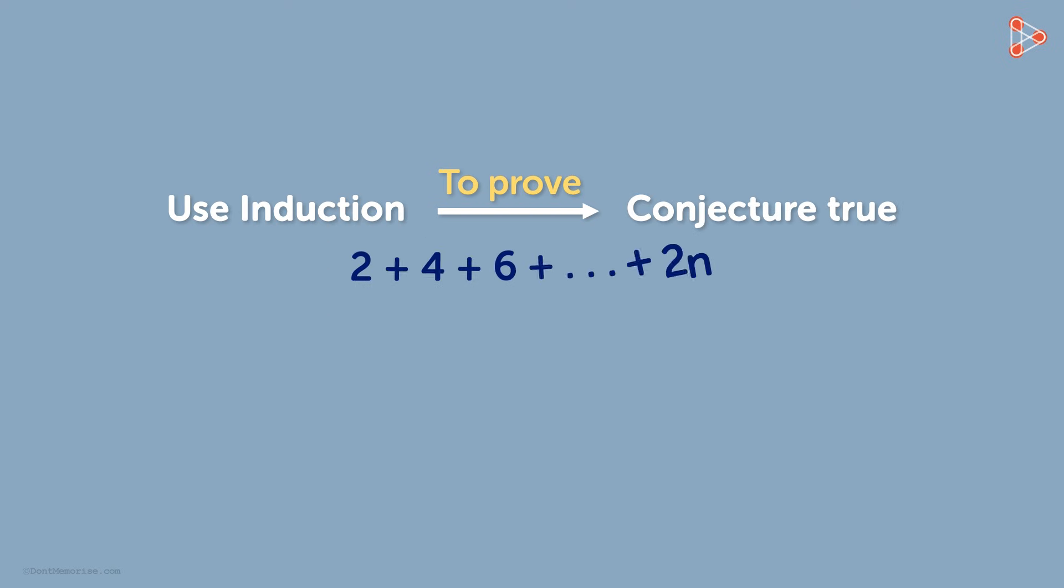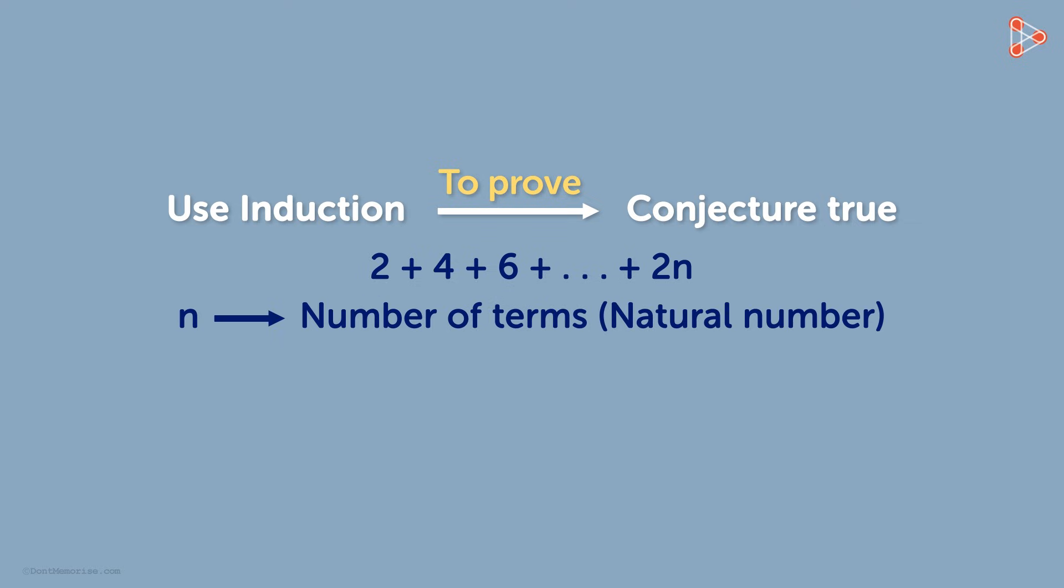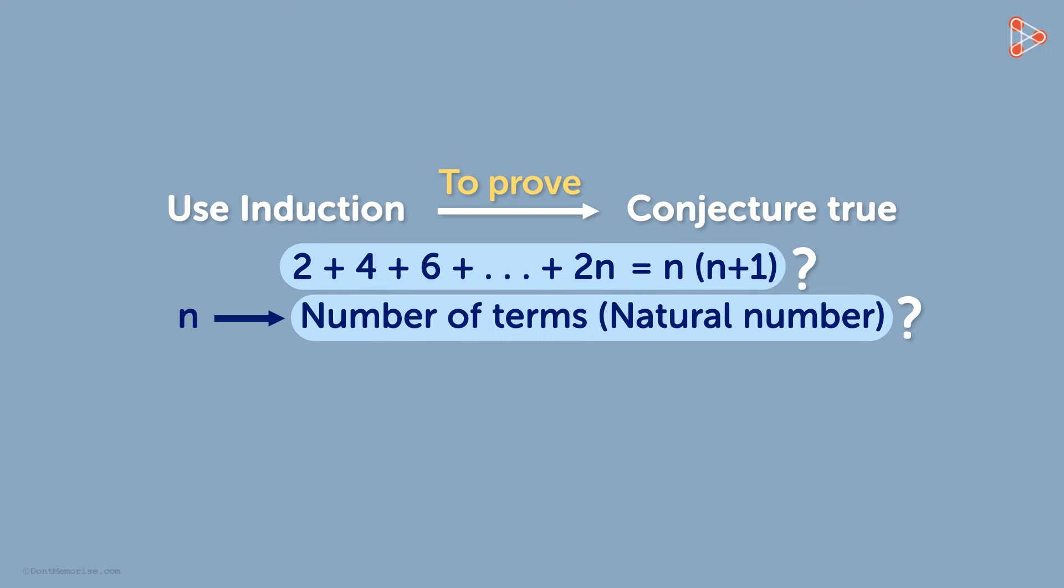Let's consider the following expression. This expression is a sum of first n positive even integers, where n can be any natural number. Based on that expression, we come up with the following formula: 2 plus 4 plus 6 up to 2 multiplied by n is equal to n multiplied by n plus 1. How did we come up with this formula? How do we know it is applicable for any natural number n?